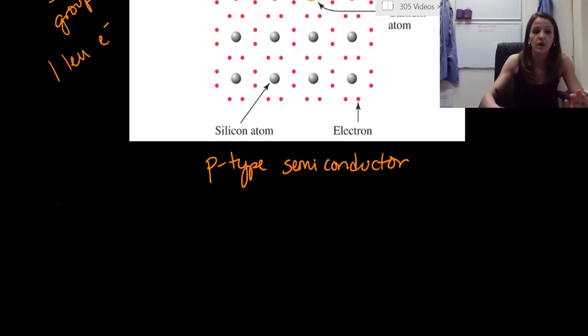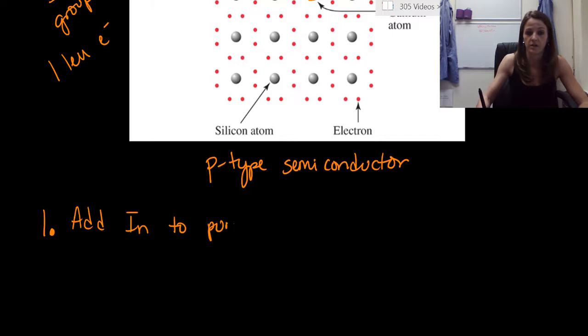So what I want to do now is ask you two questions to see if you actually understand this. So now what we're going to do is we're going to add indium to pure silicon to create a doped semiconductor.